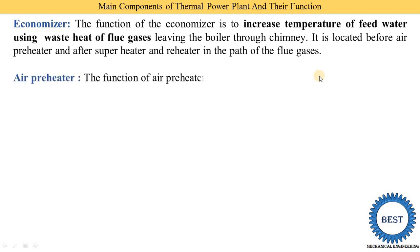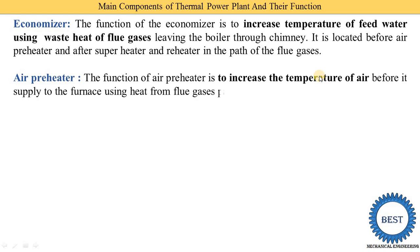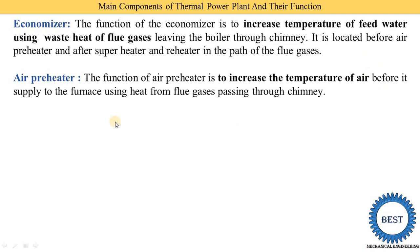The fourth heat exchanger used with the boiler is the air preheater. From the name you can understand it is used to heat the air before it is supplied to the boiler for combustion — that's why it is called the air preheater. The function of the air preheater is to increase the temperature of air before it is applied to the furnace, using the heat from the flue gases passing through the chimney.